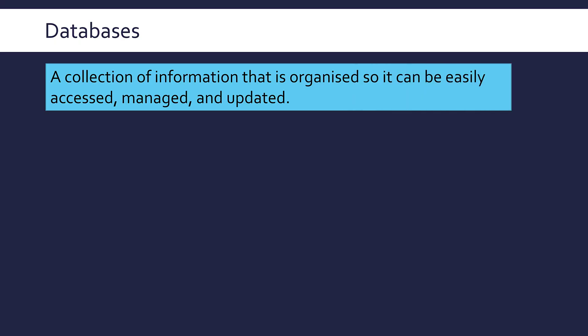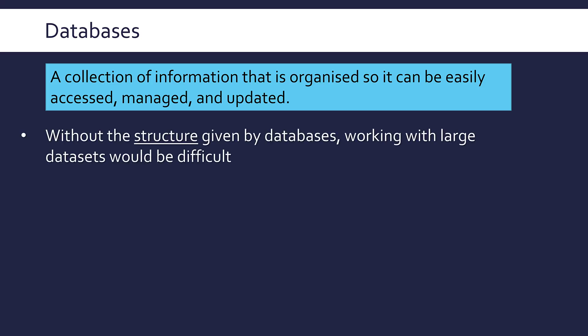A database — something all of us would have heard of — but let's define it a bit more formally. A database is a collection of information that is organized so it can be easily accessed, managed and updated. Organization is really the key word here, and without the structure given by a database, it would become really difficult to work with large datasets.